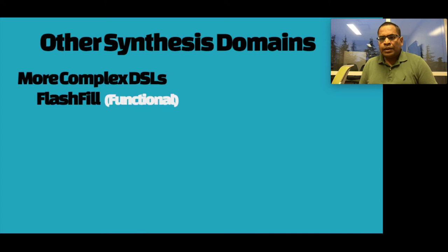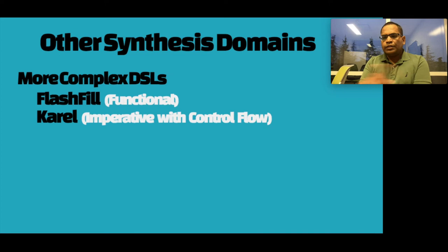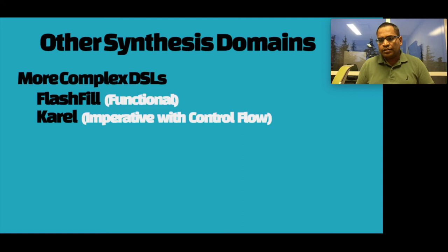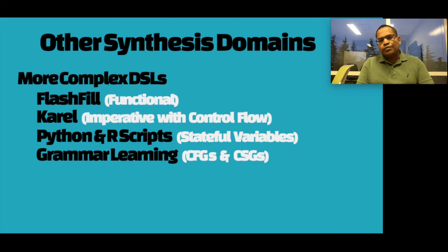The sequence model worked well for string transformations with functional regular expression-based languages. We then tried more complicated languages — for example, Karel, which is taught in Stanford's introductory programming class. Unlike Flash Fill which is mostly functional, Karel has control flow: while loops, if conditions, and nested loops without variables. We've also been looking at subsets of Python and R for data cleaning and data transformation, which have variables for maintaining state. There's also some work on learning grammars of various types.